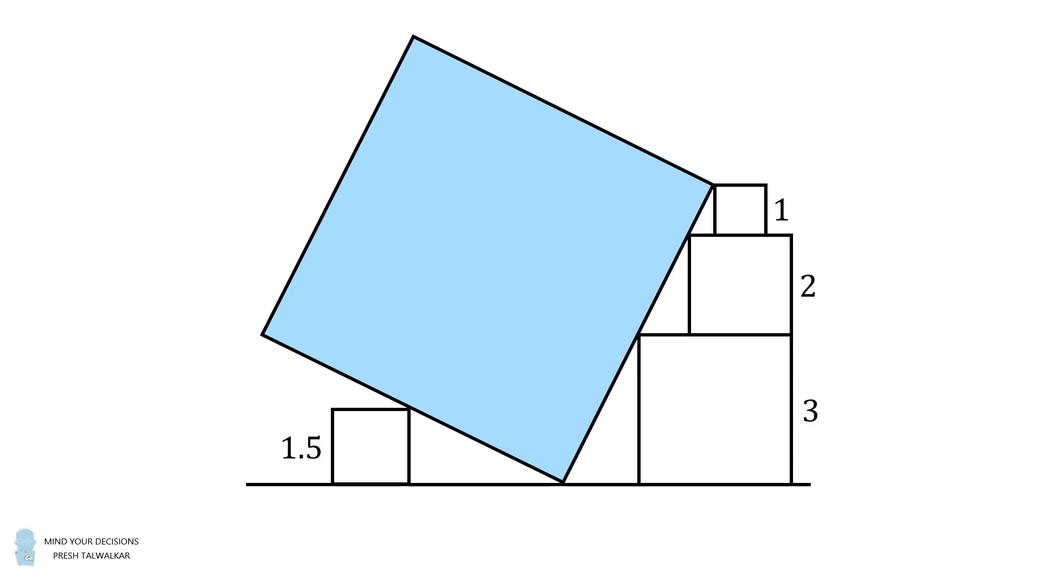The corner of the top square is coincident with the right corner of the blue tilted square, and the squares of side lengths 2 and 3 are aligned on the right side. The question is: what is the area of the blue tilted square?